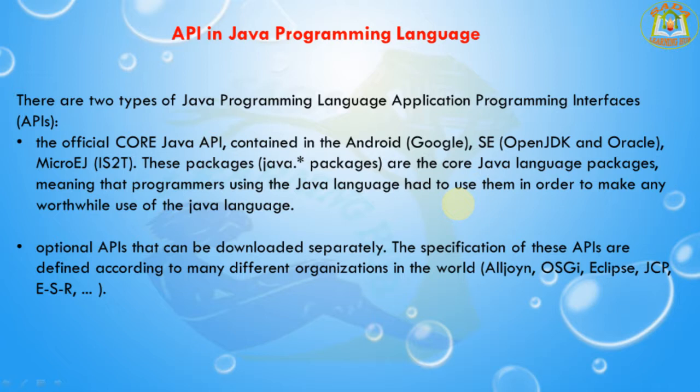In C language, API is a set of functions which comes in the form of header files. In C++ language, API is a set of functions and classes which comes in the form of header files. In Java language, API is a set of classes, interfaces, enums, and annotations which comes in the form of packages.